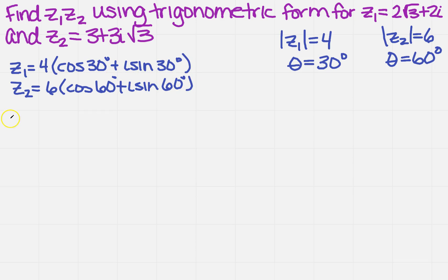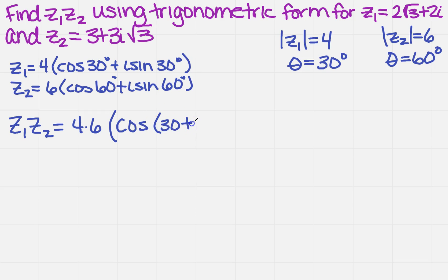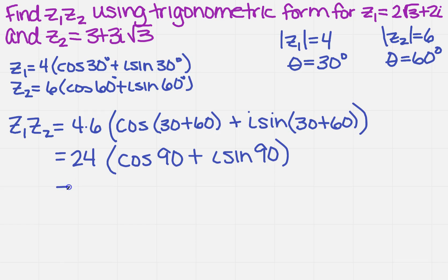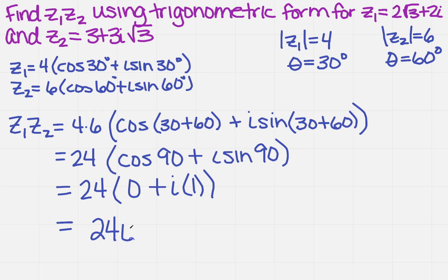Now we can do something, because the ultimate goal is to get Z1 times Z2, which we know is R1 times R2, so 4 times 6. Then I take the cosine of the sum of the angles, so 30 plus 60, plus i sine of 30 plus 60. That simplifies to 24 times the cosine of 90 plus i sine of 90. Cosine of 90 is 0, and sine of 90 is 1, so the final answer is 24i.